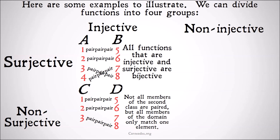For functions that are injective but non-surjective, that means not all members of the second class are paired, but all members of the domain match only one element. Each member of the range matches at most one member of the domain — it can match zero or it can match one, but it can't match two.